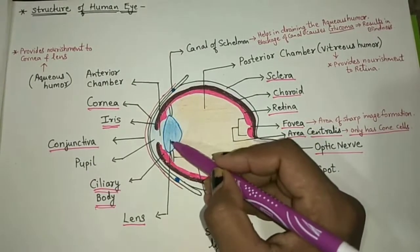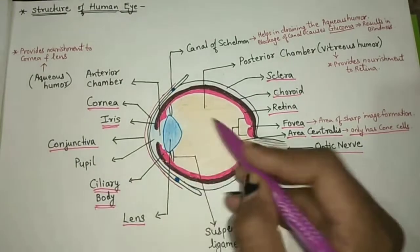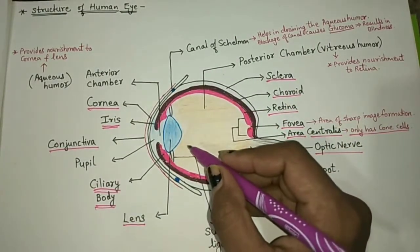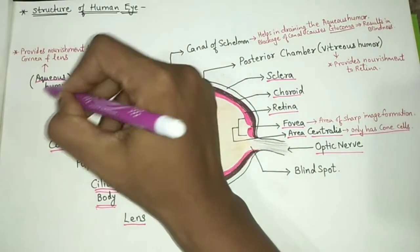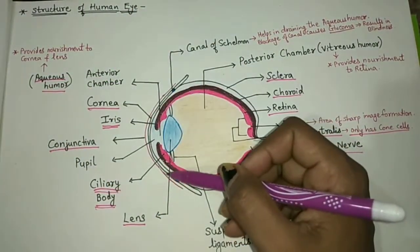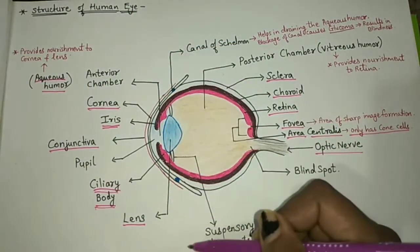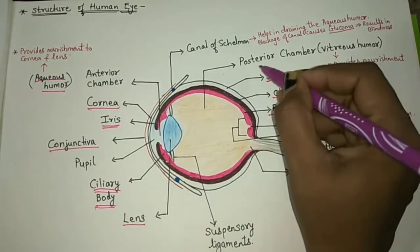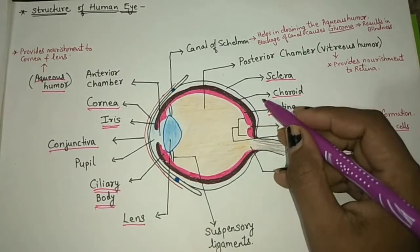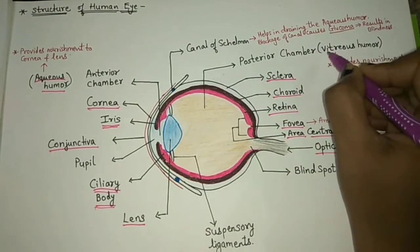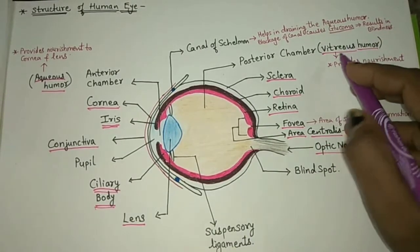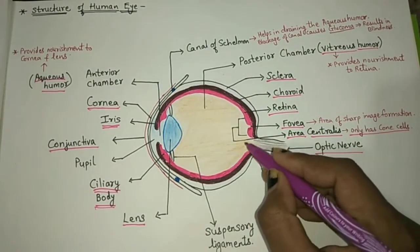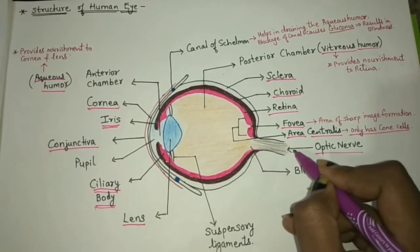The lens divides the eyeball into two chambers: the anterior chamber and the posterior chamber. The anterior chamber contains a fluid called aqueous humor, which provides nourishment to the cornea and the lens. The inner side of the eyeball behind the lens is the posterior chamber, which contains a fluid called vitreous humor, and this vitreous humor provides nourishment to the retina.